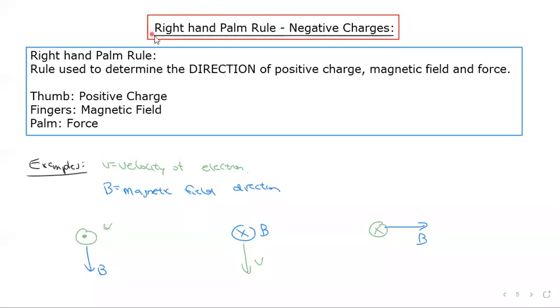Today we'll be looking at some examples involving the right-hand palm rule, focusing on negative charges. Now a quick reminder of what the right-hand palm rule is: it's a rule used to determine the direction of positive charge, velocity, magnetic field, and force.